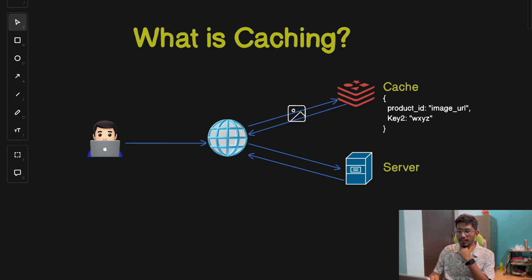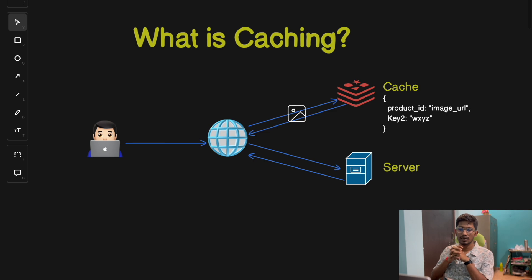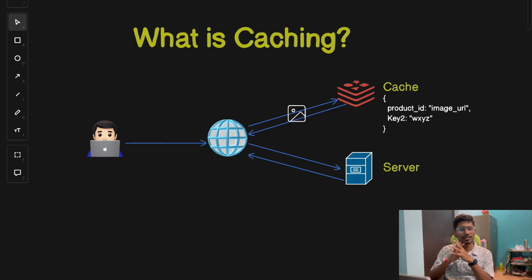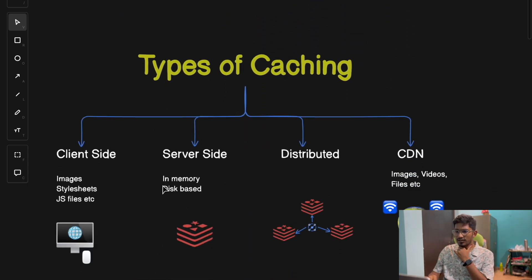This simple key-value approach makes cache access very fast and efficient, especially for frequently accessed data. In simple terms, caching helps us avoid unnecessary computation or data retrievals from the database, which speeds up our application. It's particularly crucial in large-scale applications where every microsecond counts.